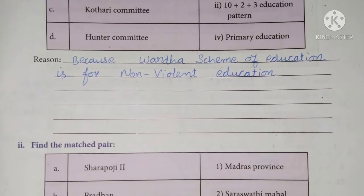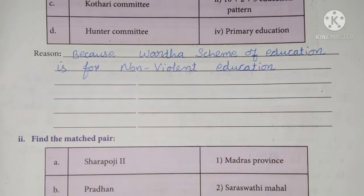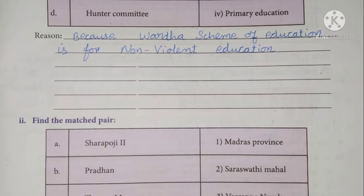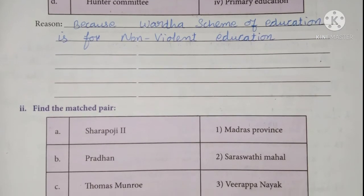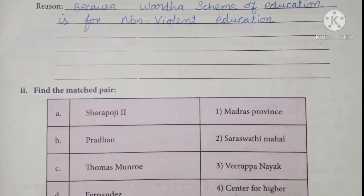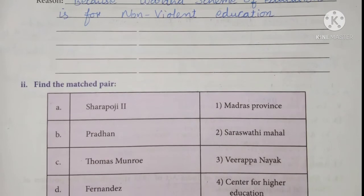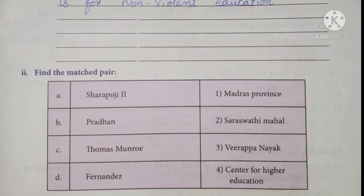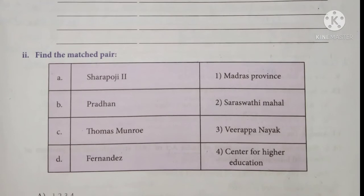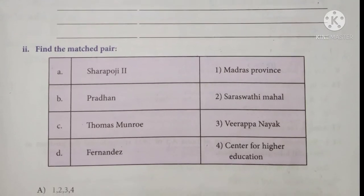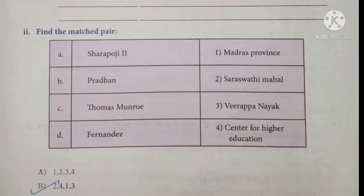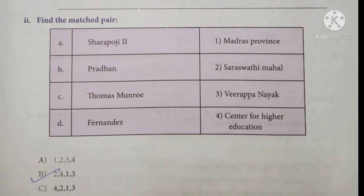And next: find the matched pair. Some pairs are given and one pair is the correct match. We have to find out the correct one and pair everything with the opposite sign. According to that, the answer is option B: 2, 4, 1, 3.